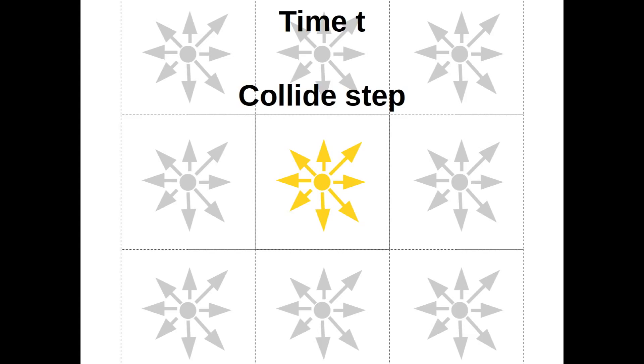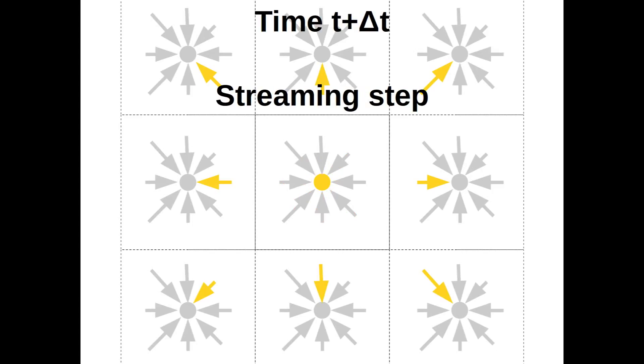Afterwards, the collided distributions are streamed to the neighboring cells. Yellow distributions leave the center cell and gray distributions from neighboring cells enter the center cell.